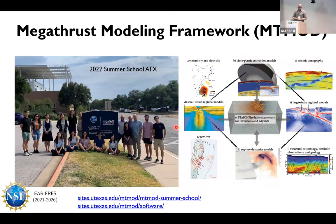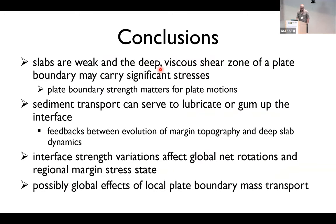It's a challenge to explore this. We're trying to do so in an earthquake context with a recently funded NSF-FRES project, where we're also running summer schools. So if you're interested in these things in an earthquake focus, I encourage you to reach out. But I want to conclude with this recognition that slabs may well be relatively weak. And if this is the case, the interface may matter. Not so much the brittle interface, but the deep ductile shear zone. Those plate boundary stresses for sure matter to modulate plate speeds. Lateral variations may matter on global scales. And the sediment transfer can serve to lubricate or gum up the interface. And there's these possibly global effects of local plate boundary mass transport. Thank you.